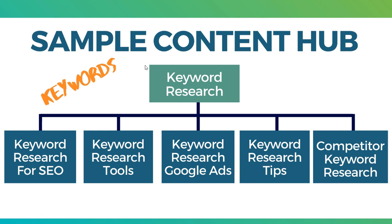When you're talking about keyword research, someone who owns an affiliate marketing website versus an e-commerce website versus a local business website — they're all going to take different strategies. Some people are looking at keyword research for SEO, some for tools, some for how to do it for Google Ads. So what I start with are keywords: SEO, tools, Google Ads, tips, and competitor keyword research. These are all going to be subtopics related to keyword research.